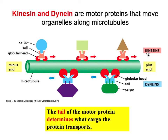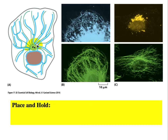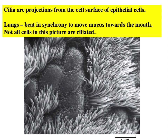The positive end has kinesins moving in that direction in many different varieties carrying different cargos, while dyneins at the minus end move in the opposite direction. These microtubule roadways can reach the far ends of the cell by wrapping around and forming extensive pathways. Microtubules have also been adapted through evolution to perform an additional function inside cilia and flagella.